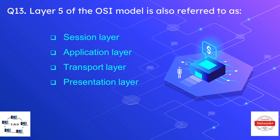Question number thirteen is: layer five of the OSI model is also referred to as — options are session layer, application layer, transport layer, and presentation layer. The correct answer is session layer. Application is layer seven, transport is layer four, presentation is layer six, and session is layer five.